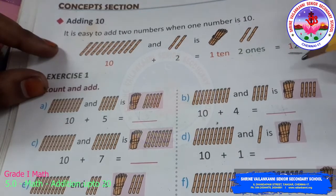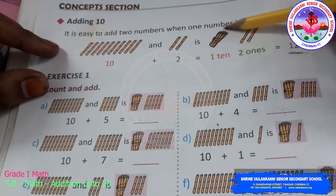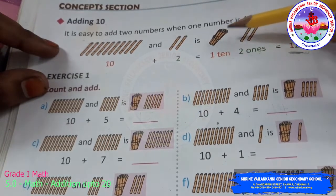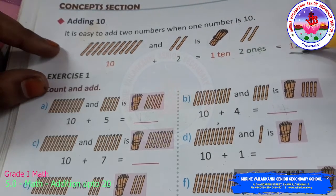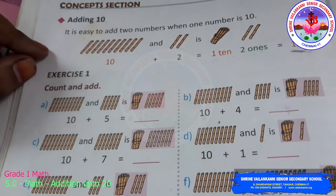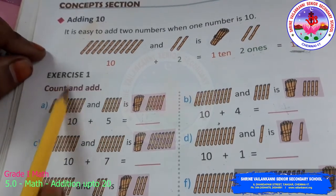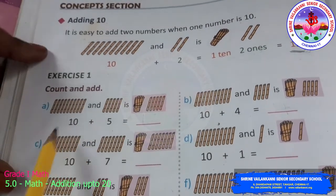Or you know this is 10 and you count after 10. After 10, 11, 12. That way also you get the answer. I will do two sums in exercise 1. You can do the others as homework.